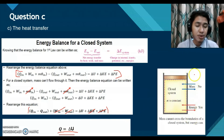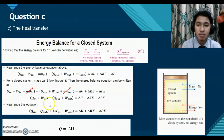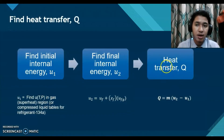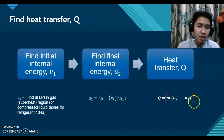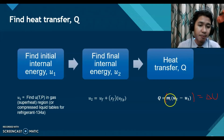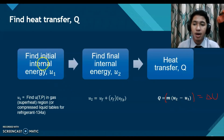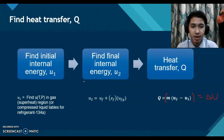This is a closed system where mass and volume are constant — only energy can cross the boundary. To find heat transfer Q, which equals delta U, we need to determine the internal energies U1 and U2. We already have the mass. The steps are to find the initial internal energy U1 and the final internal energy U2.